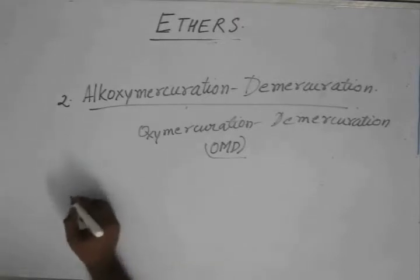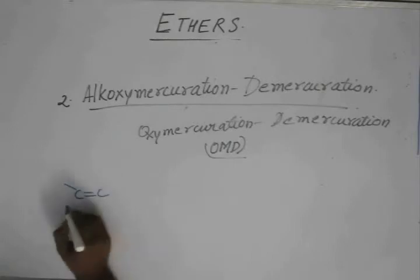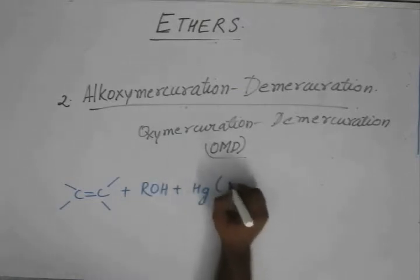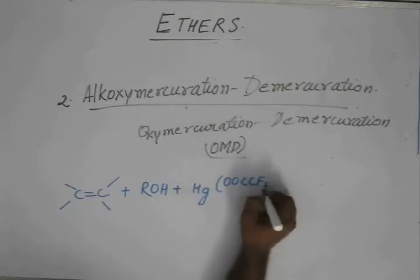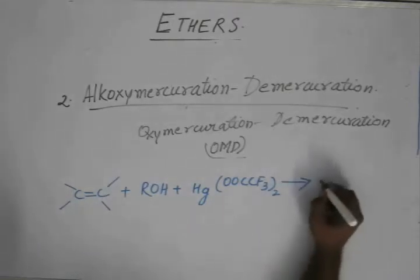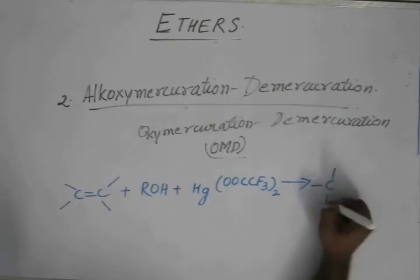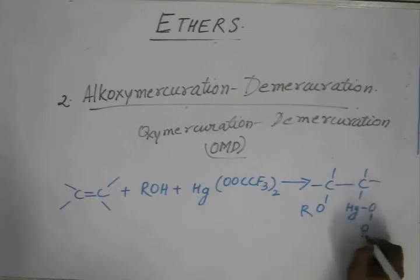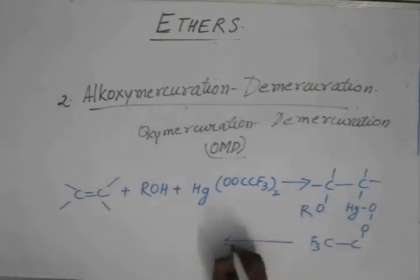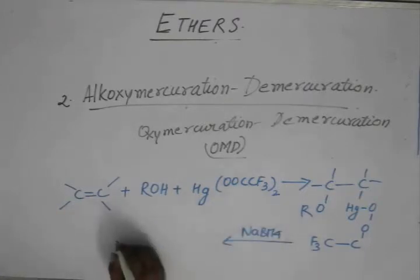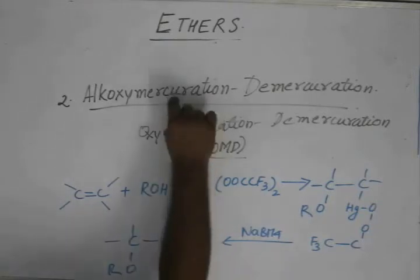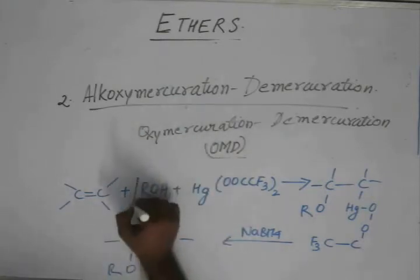Let me just quickly write down the general formula for the general reaction for alkoxymercuration-demercuration. We have a general alkene, we have alcohol, and we are left with this, followed by reducing agent NaBH4. So we are left with an H and an OR. The only major difference between alkoxymercuration-demercuration and oxymercuration-demercuration is the use of alcohol.